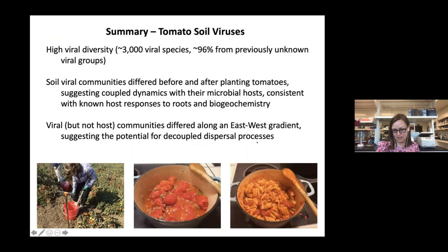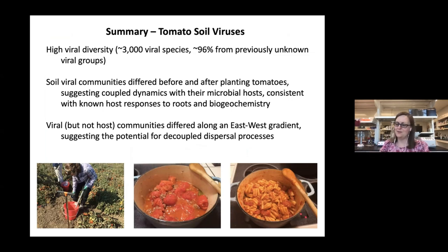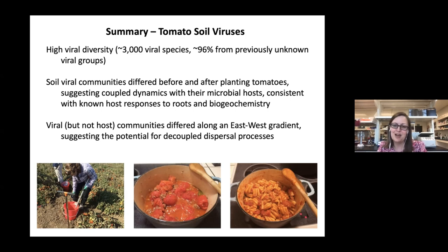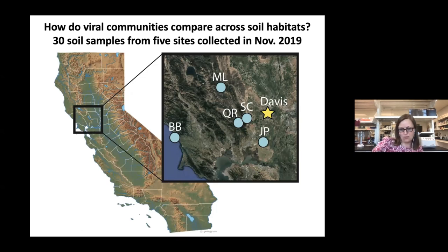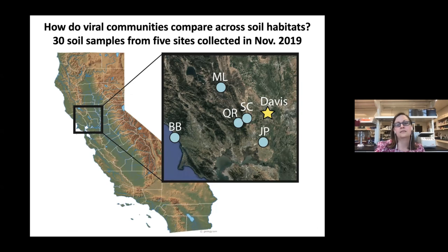In the interest of time I'm going to skip the summary, but I wanted to note that it's fun collecting samples from agricultural fields — blood, sweat, and tears during the day, but you can make a nice pasta from the tomatoes you collect. I now want to quickly go over some data from natural systems, looking at a comparison of viral communities across different soil habitats in northern California.